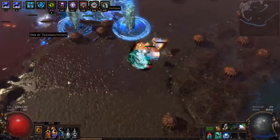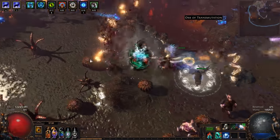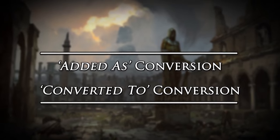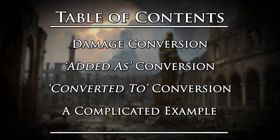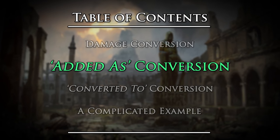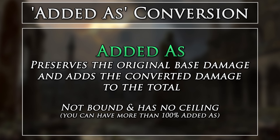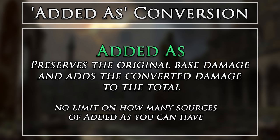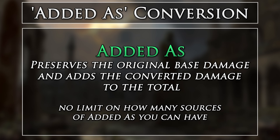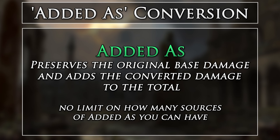First we will take a look at the simplest of all conversion types: added as. Added as preserves the original base damage and adds the converted damage to the total. This type of conversion is not bound and has no ceiling, meaning that you can have more than 100% of a damage type added as. There is also no limit on how many sources of added as conversion you may have.